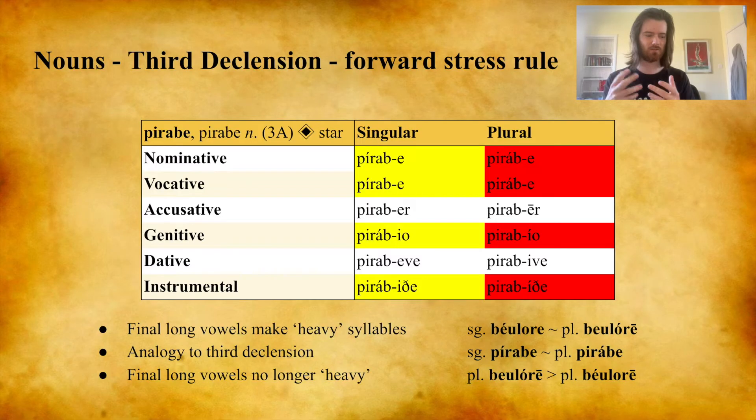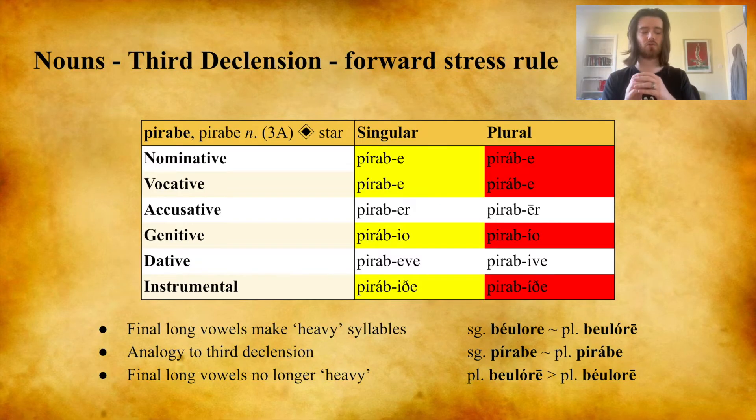Then what ends up happening is that final long vowels are no longer considered heavy, so Beulore becomes Beulore. The only difference in the first declension is whether the final -a is short for the singular or long for the plural. But because the third declension plural never had a long vowel to begin with, the syllable was never heavy, so it can't become unheavy. That's why you have a difference between Pirabe and Pirabe.